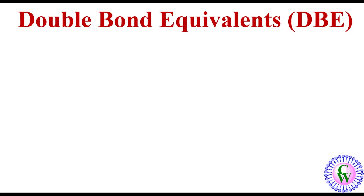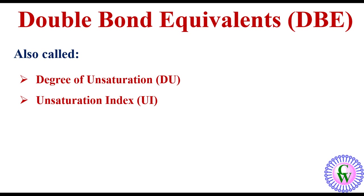It is very useful for the structure elucidation of organic molecules. It is also called degree of unsaturation DU, unsaturation index UI, and index of hydrogen deficiency or IHD.